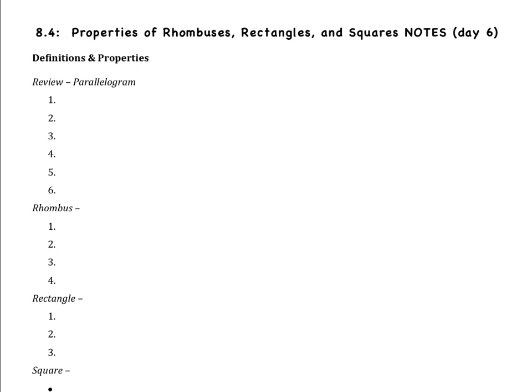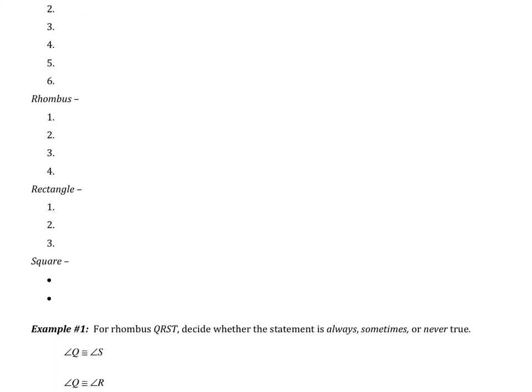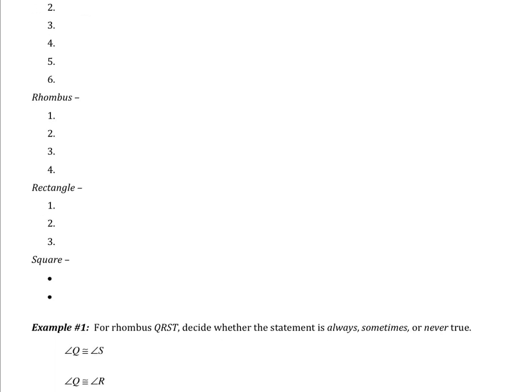I already mentioned earlier that rhombuses, rectangles, and squares fit under the parallelogram family. So the first property of a rhombus is that it has all of the properties of a parallelogram. And in fact, this is also true of a rectangle and a square.